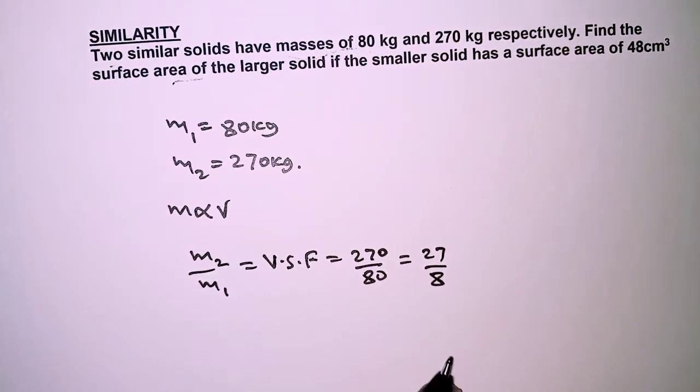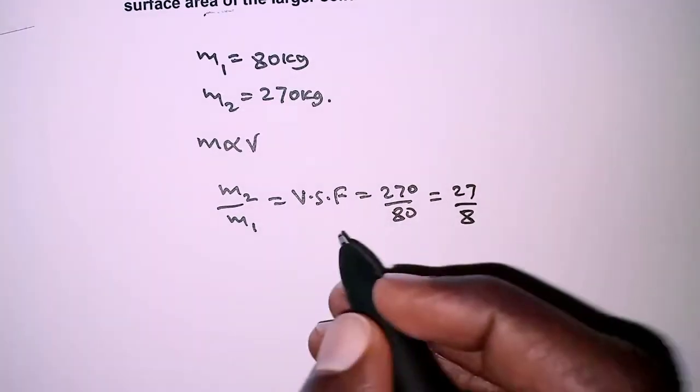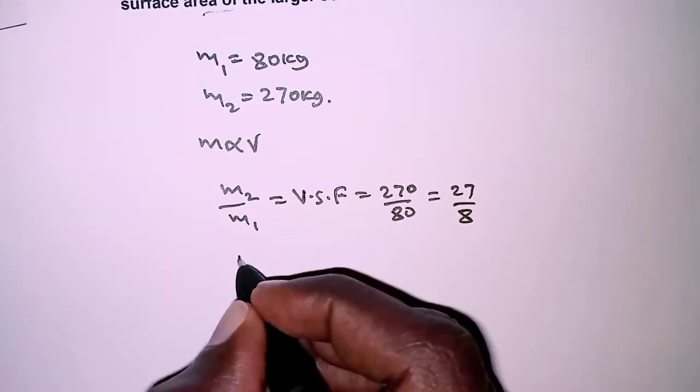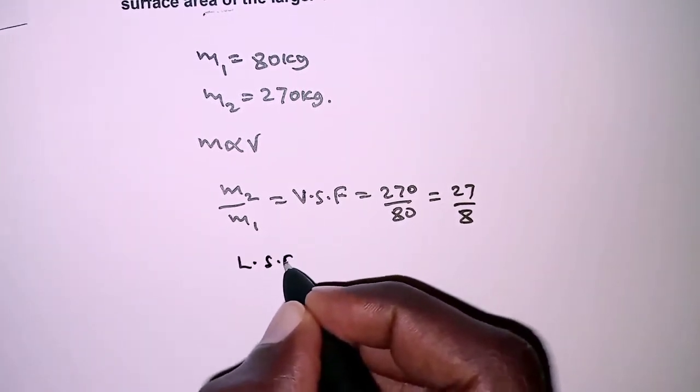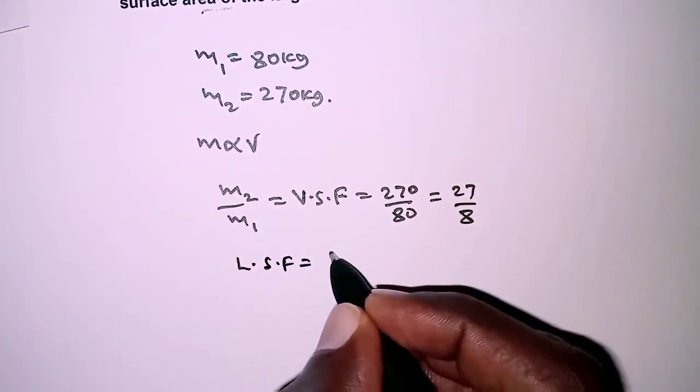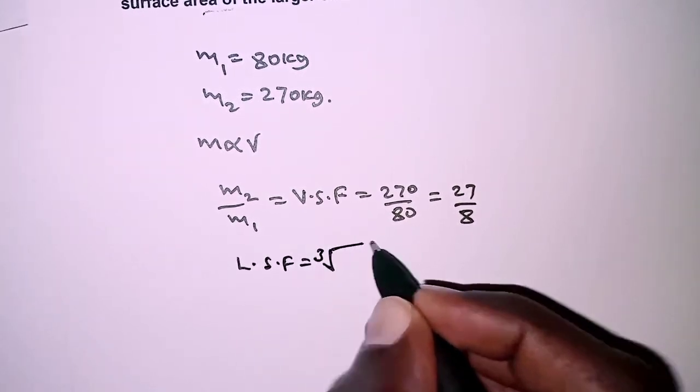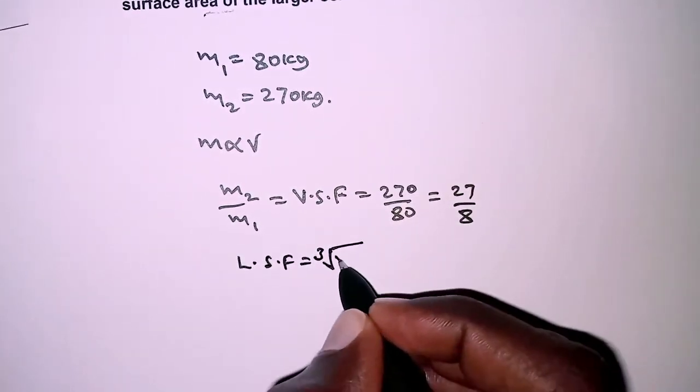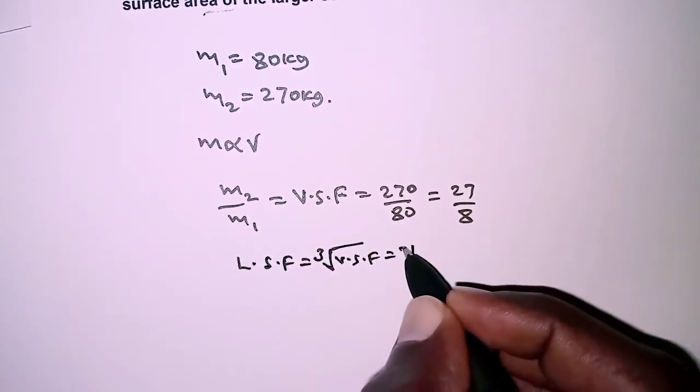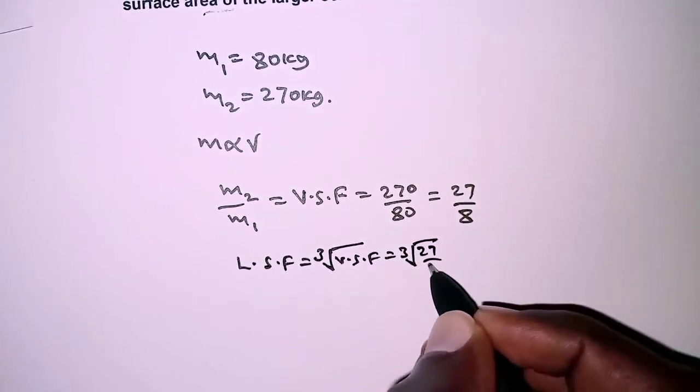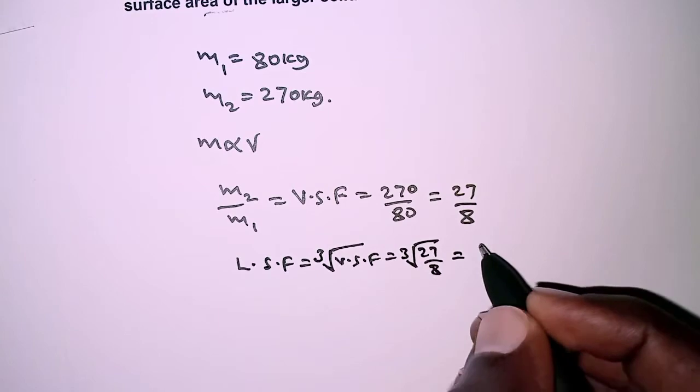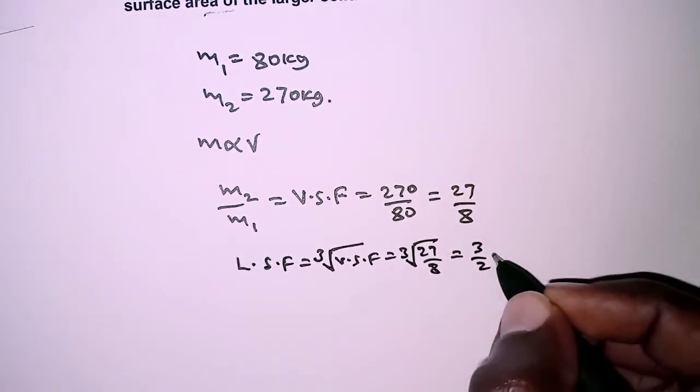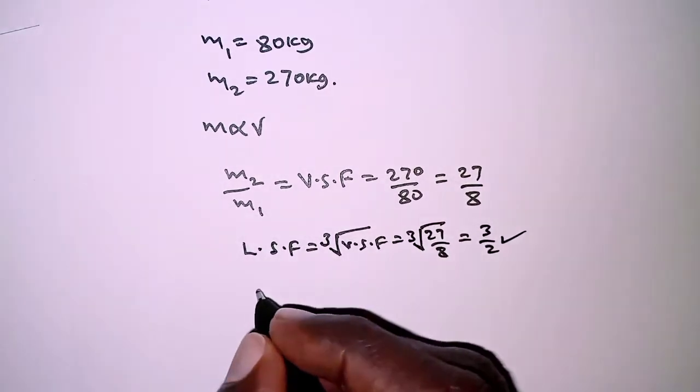We obtain the area scale factor via the linear scale factor. So first we get the linear scale factor, which is the cube root of the volume scale factor, and that is the cube root of 27 over 8, which equals 3 over 2.